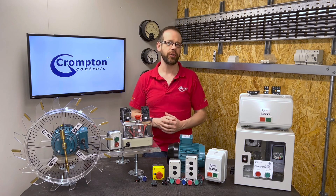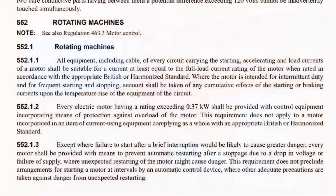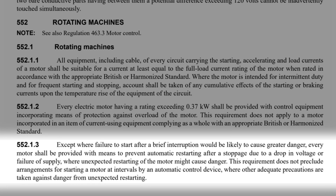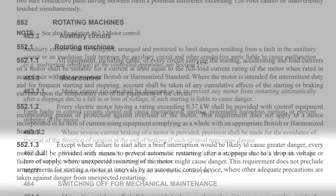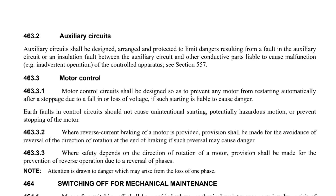There are two regulations that are very similar to each other. One is in 552.1.3 in the section on rotating machines. It reads: except where failure to start after a brief interruption would be likely to cause greater danger, every motor shall be provided with means to prevent automatic restarting after a stoppage due to a drop in voltage or failure of supply, where unexpected restarting of the motor might cause danger. This requirement does not preclude arrangements for starting a motor at intervals by an automatic control device where other adequate precautions are taken. The other is found in 463.3.1, which relates to motor controls and is so similar that we won't reread it here.